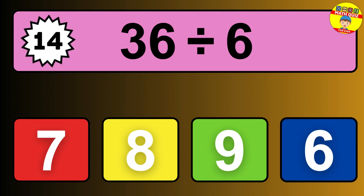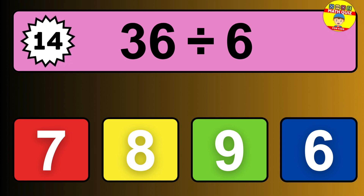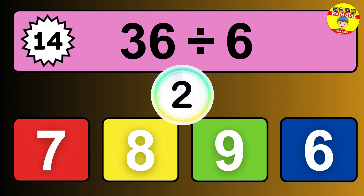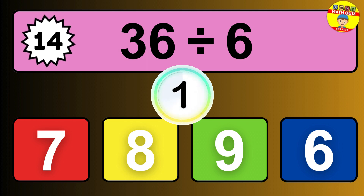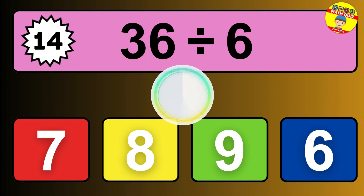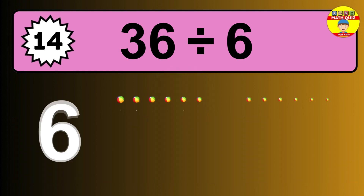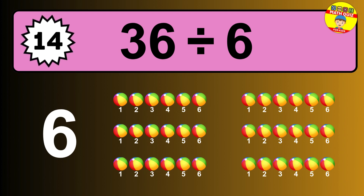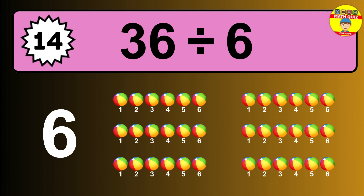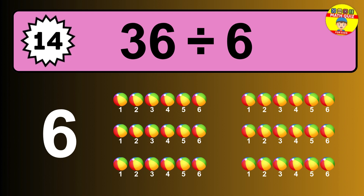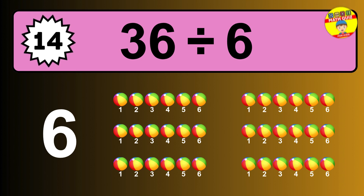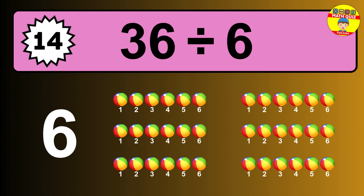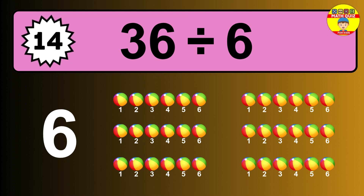36 divided by 6 is... time to think. Let's go to the solution. Divide the number 36 by 6. Each group contains 6 units. So dividing 36 by 6 results in 6 equal groups. Thus, the result is... 36 divided by 6 equals 6.